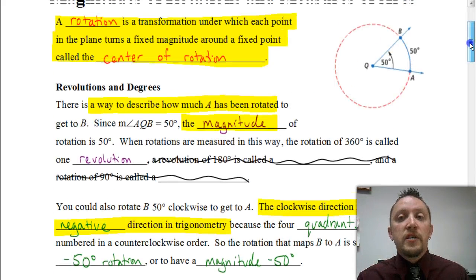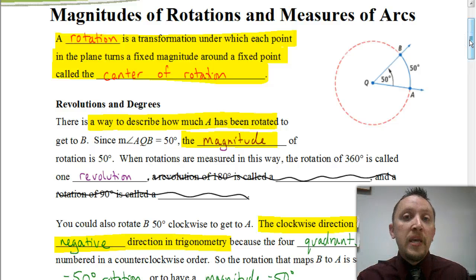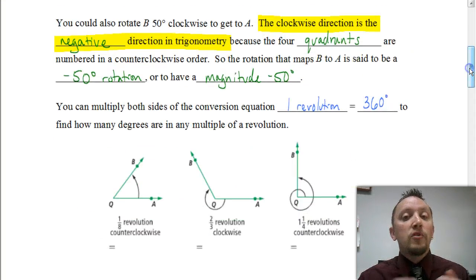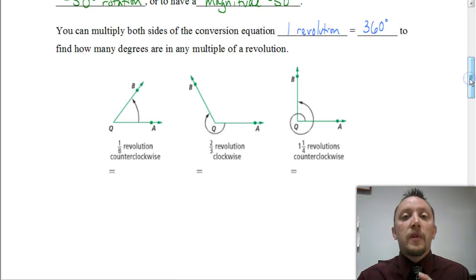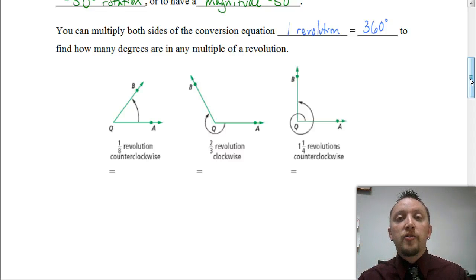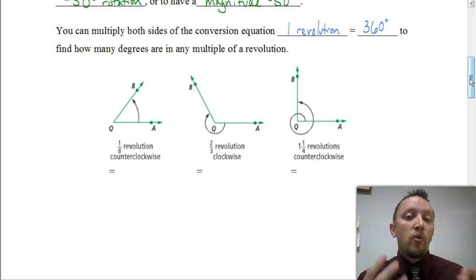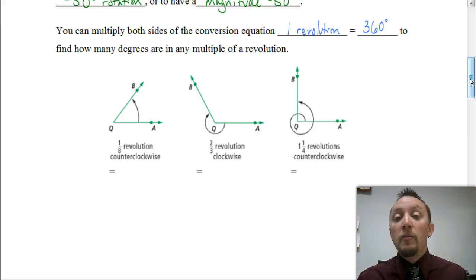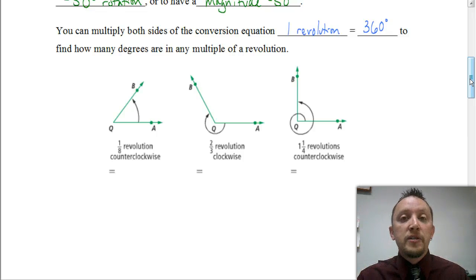Going back to this previous diagram, if we're going from point B to point A, we would say that's a negative 50 degree rotation. The other thing to make sure we understand is a revolution. A full revolution would be 360 degrees. So if we're dealing with parts of a revolution, we use the fact that one revolution is 360 degrees. If we're dealing with a partial revolution, we multiply that partial revolution by 360. Or if it's more than a full rotation, we multiply by 360 to figure out how many degrees we're working with.